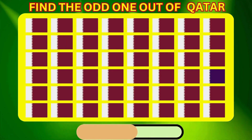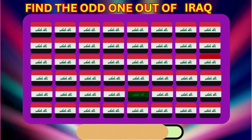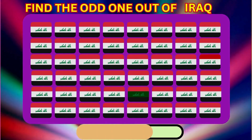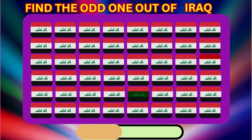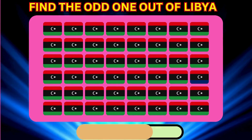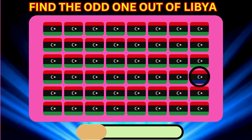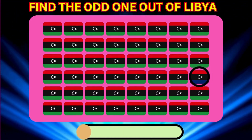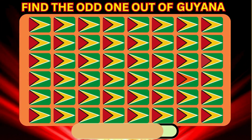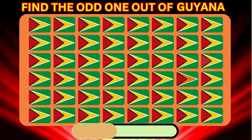Find the Odd One Out of Jamaica. Find the Odd One Out of Qatar. Find the Odd One Out of Iraq. Find the Odd One Out of Libya. Find the Odd One Out of Ghana.